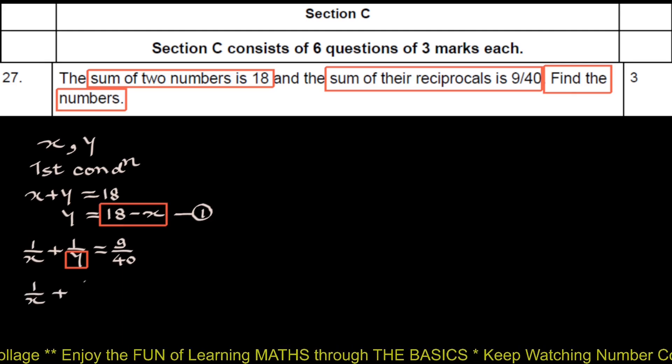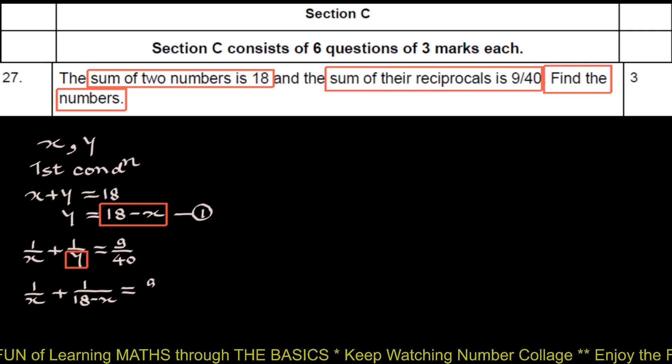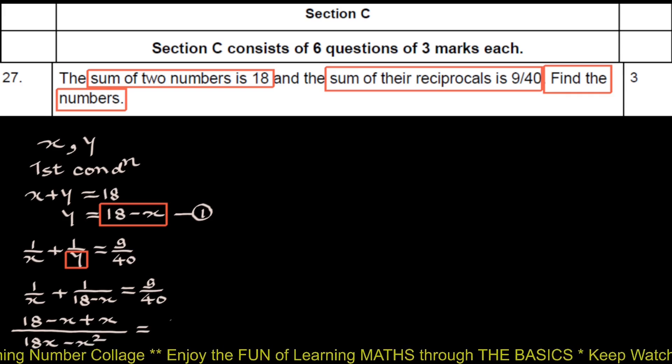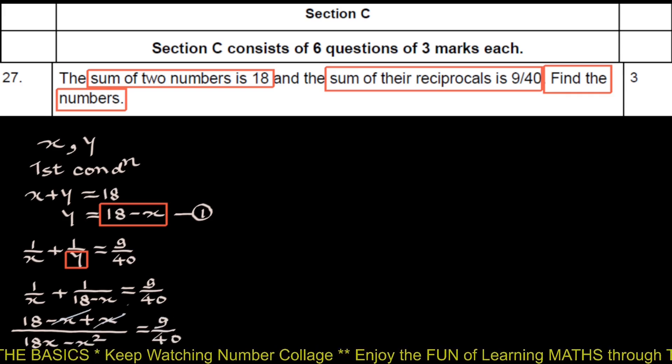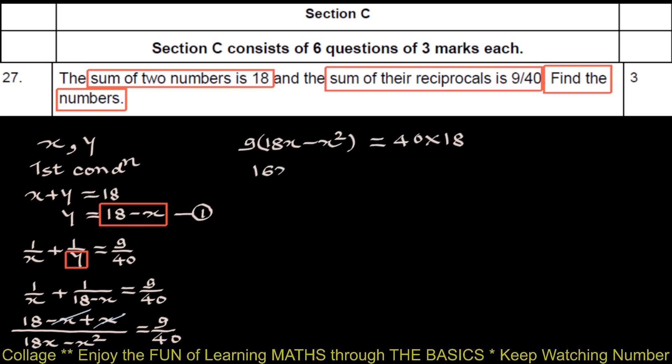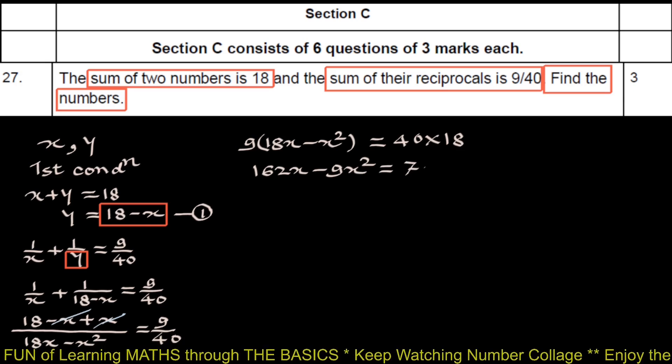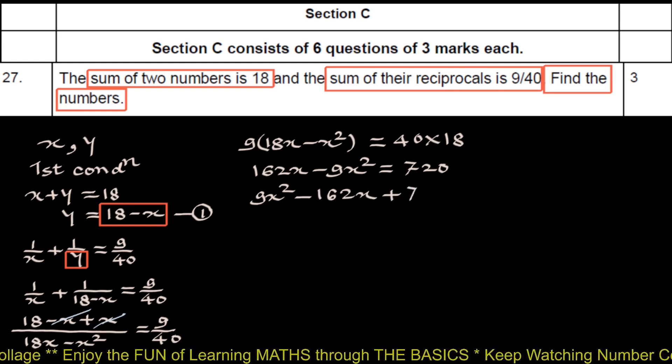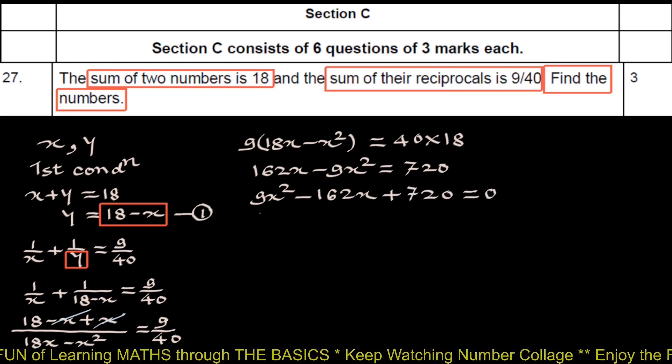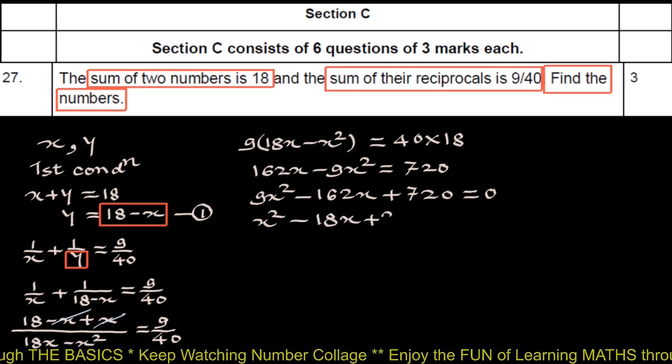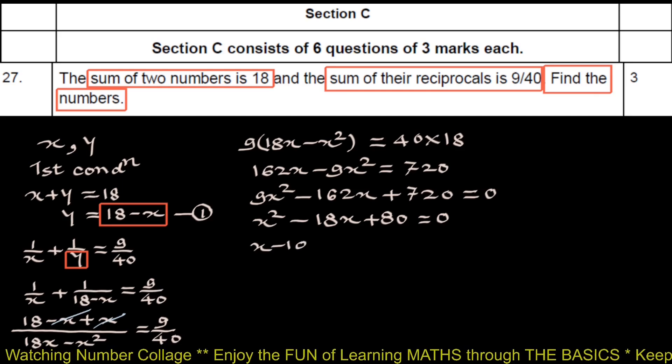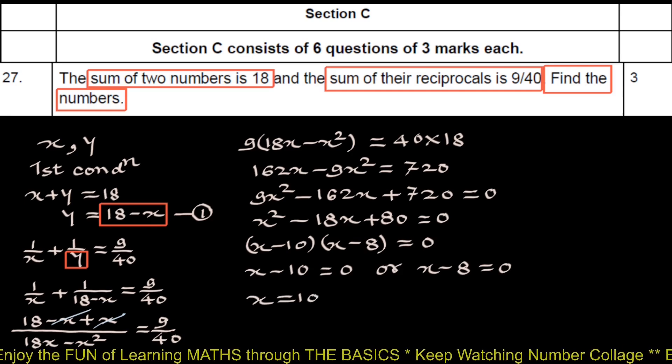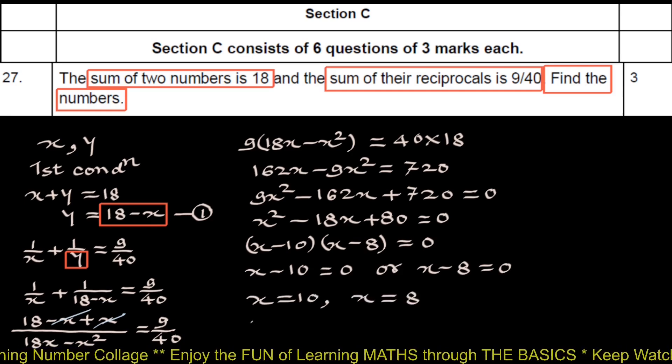So 1 upon x plus 1 upon 18 minus x equals 9 upon 40. 18 minus x plus x upon 18x minus x square equals 9 upon 40. x minus x is 0. By cross multiplication, 162x minus 9x square equals 720. Changing the signs, 9x square minus 162x plus 720 equals 0. Dividing throughout by 9, x square minus 18x plus 80 equals 0. Factorizing x minus 10 into x minus 8 equals 0, which is x equals 10 and x equals 8. So the required numbers are 10 and 8.